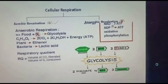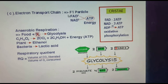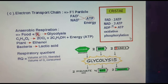Next is the electron transport chain. The NAD+ and FAD+ from the Krebs cycle move to the cristae of the inner membrane. The oxysomes, also called F1 particles, on the cristae are involved. FAD produces 2 ATPs and NAD produces 3 ATPs. This process is called oxidative phosphorylation. The electron transport chain converts FAD+ and NAD+ to ATP, which is energy.